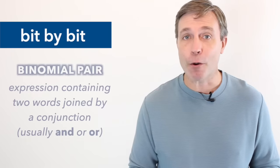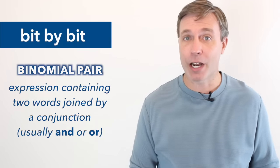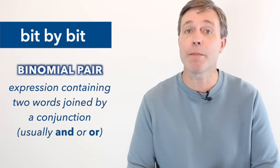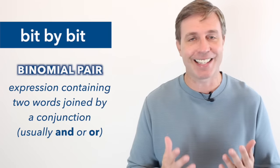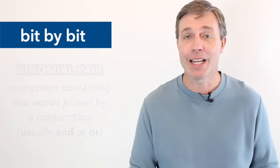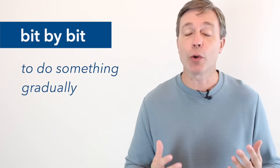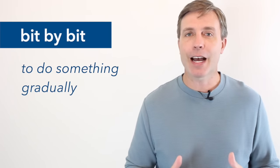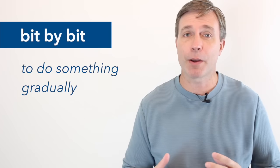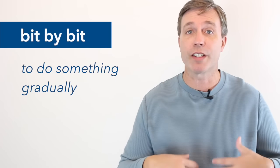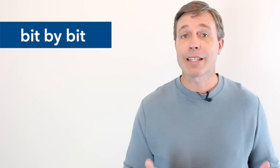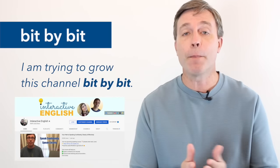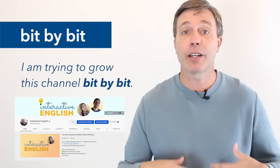And bit by bit is the next phrase that I'd like to teach you. So this is a binomial pair, which is talking about an expression that has two words joined by a conjunction. And that conjunction, it's often and or or. But in this case, it's not. We're talking about by, bit by bit. And what this means is gradually. You're going to do something gradually. Often I think that you would use this when talking about something you're going to grow or develop, or even just the opposite, something that you're going to destroy or take apart. So I could say that I am trying to grow this channel bit by bit. I'm doing it gradually and hopefully it'll get bigger and bigger.